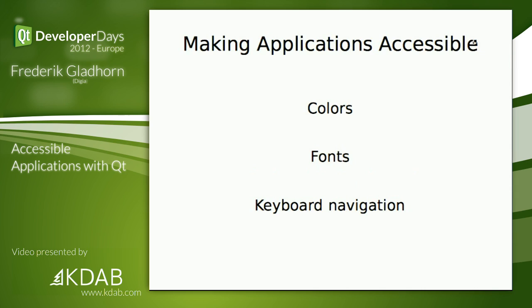In order to improve your application, the first things to check are: whether you respect system colors, or if not, whether you offer enough contrast. The same goes for fonts — is it possible to set custom fonts? And try using your application with a keyboard only. That's quite a challenge sometimes. Try using the Tab key, because that's how a blind person would explore your application — pressing Tab, discovering buttons and text entry fields. Check if you can use it without the mouse.